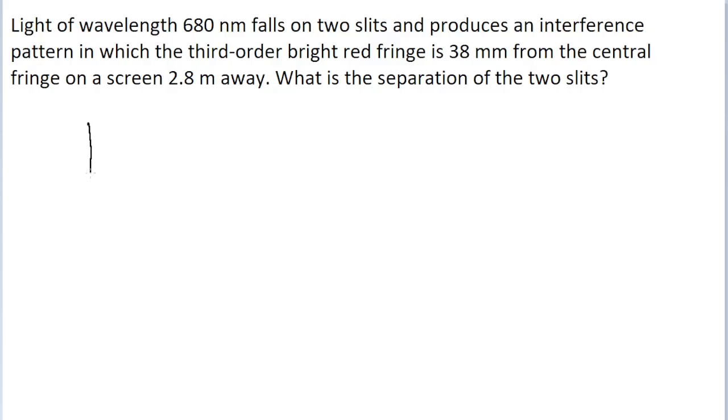In this problem, we have light passing through two slits, which is creating an interference pattern on a screen that is some distance away. I'm going to define the distance between the screen and the slits as the variable L, which is given in the problem as 2.8 meters. And we're also told that the wavelength of light in this case is 680 nanometers.